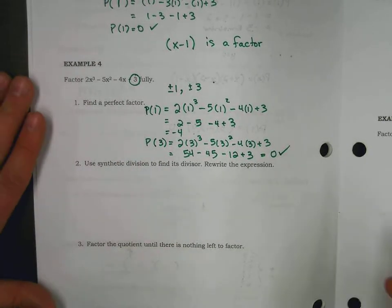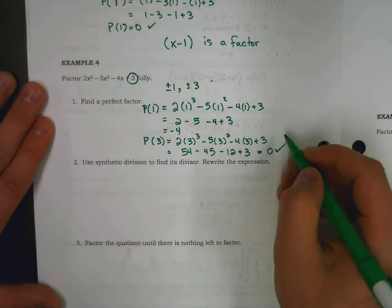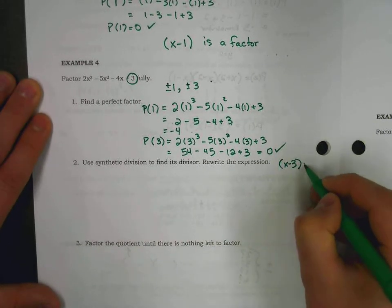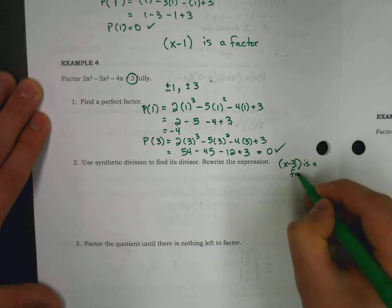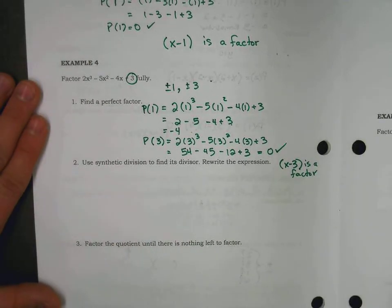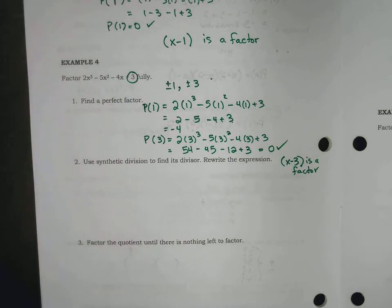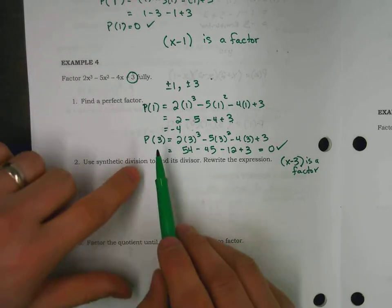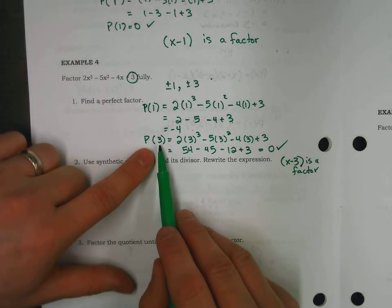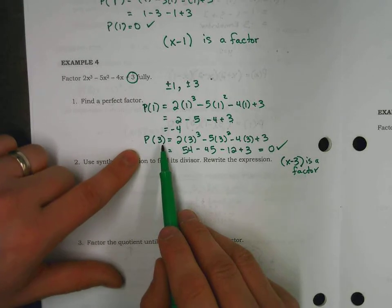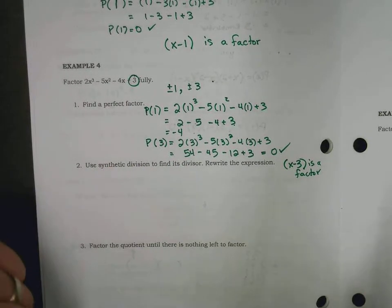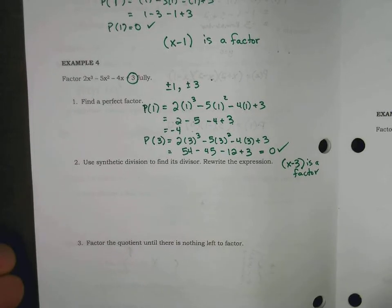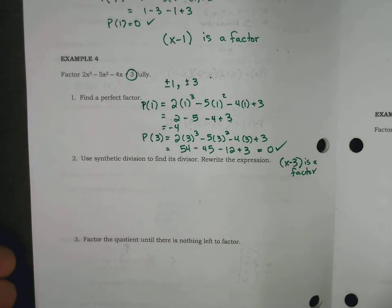So, we know that x equals three works, which means, and I'll always write this, x minus 3 is a factor. Perfect. Now, we don't have to keep testing until we get more factors. You can actually have fractional or rational zeros as well. So, we're not going to start testing one half and three halves and fractions, but those might be possible. So, we're only going to be focusing in this course on whole numbers or integers.